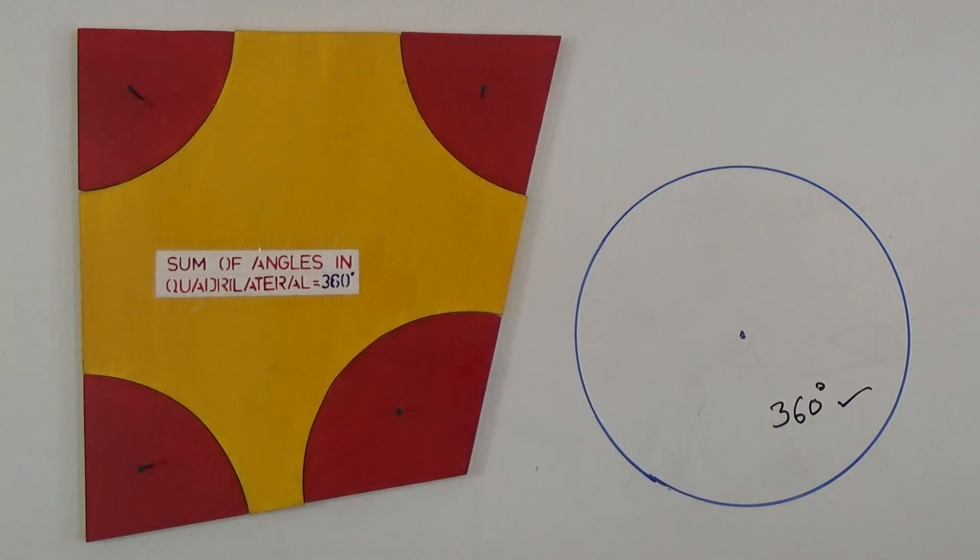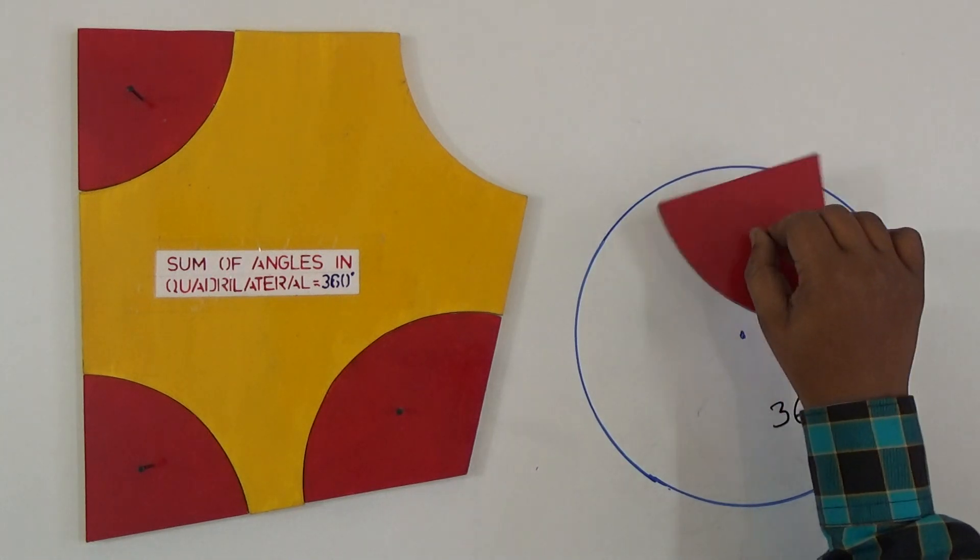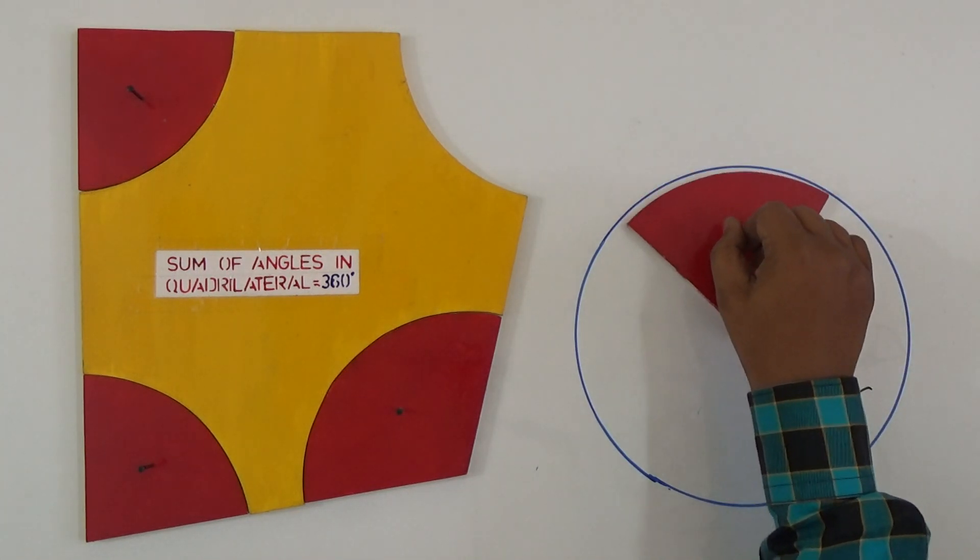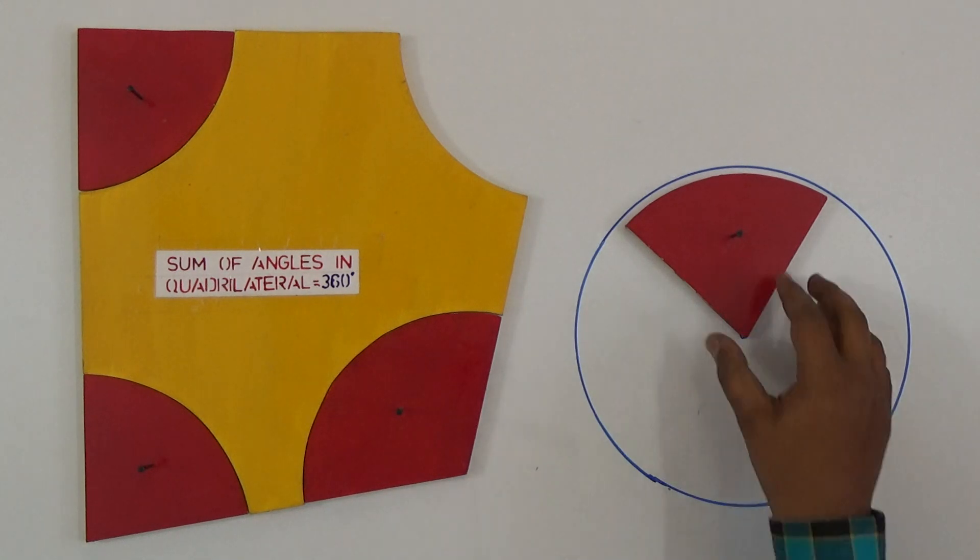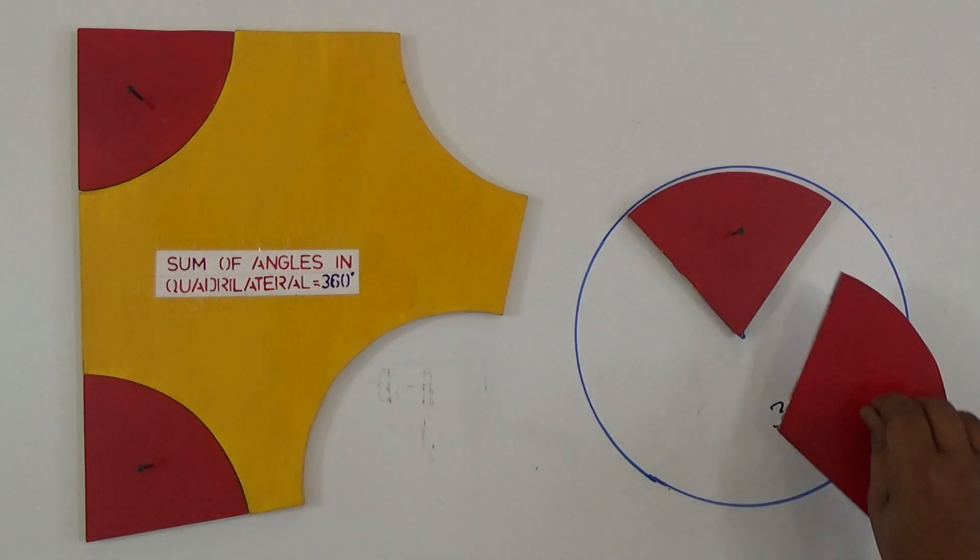This is angle one I took. If I keep it, it should form a circular shape. Let's see now. Again I have taken angle two, so join this.